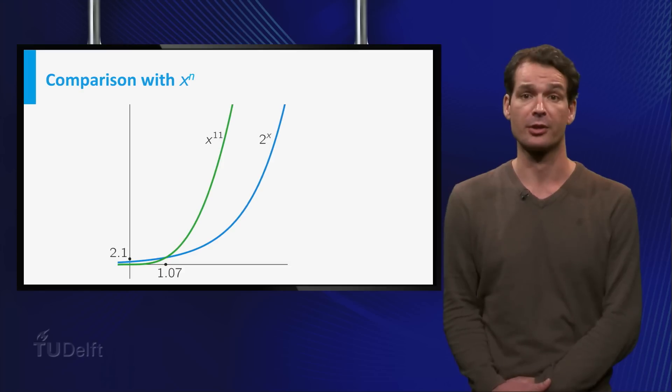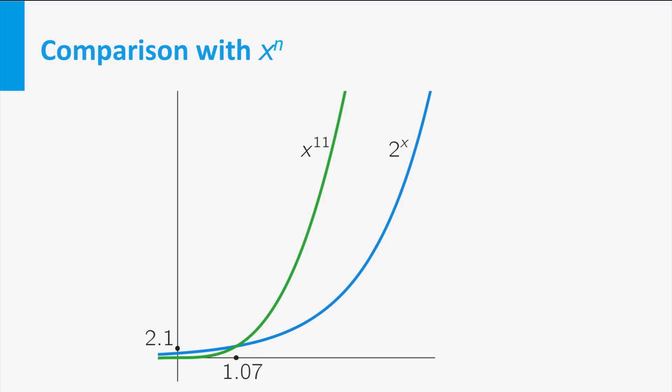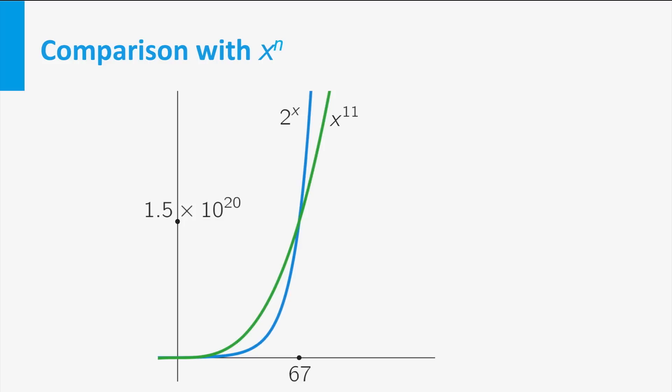To see how fast an exponential function grows, we compare the graph of 2 to the power x to the graph of x to the power 11. Which function do you think will grow the fastest? Well, look at the graphs. It looks like x to the power 11 grows the fastest. But if we zoom out, we see that 2 to the power x catches up quickly and grows much faster than x to the power 11. In fact, b to the power x with b greater than 1 grows faster than x to the power n for any number n.